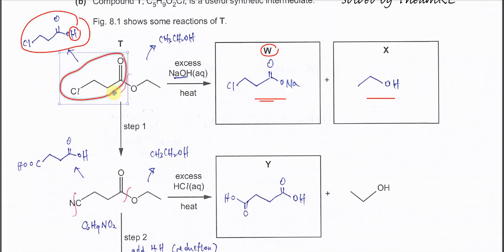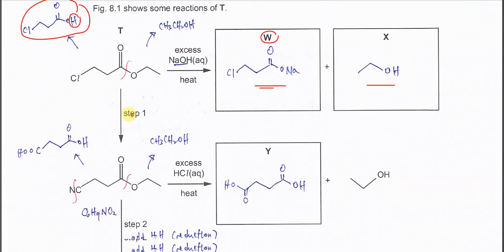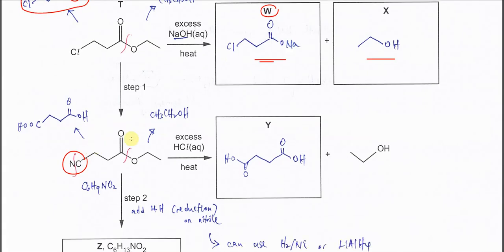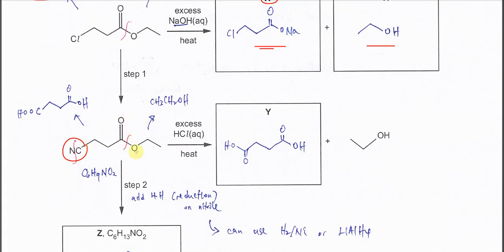Now for T undergoing step one, we try to compare the compounds. After step one, just this part changes — the Cl is now substituted by the CN. So it's forming a nitrile, which we know is a nucleophilic substitution. After that, this compound will undergo hydrolysis with acid solution, because it's HCl with heat.